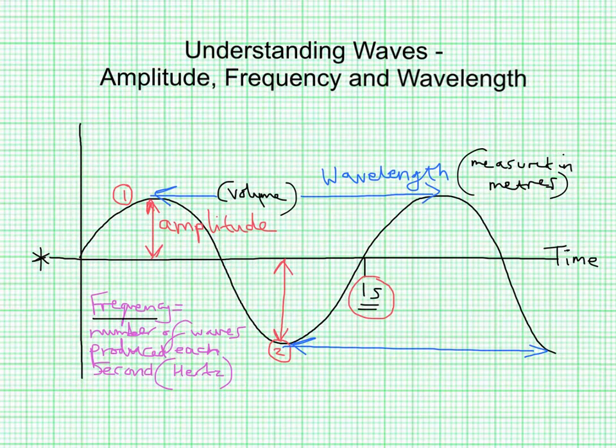The unit frequency there is hertz, or sometimes abbreviated to capital H, lowercase z. It's common for kilohertz, megahertz and gigahertz to be used when waves have very high frequencies. For example, most people cannot hear a high-pitched sound above 20 kilohertz, and radio stations broadcast radio waves with frequencies of about 100 megahertz.